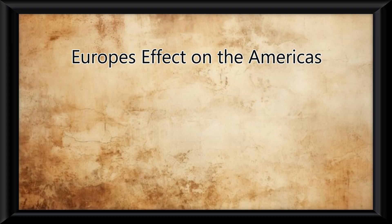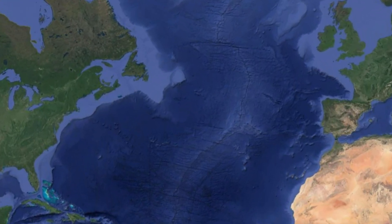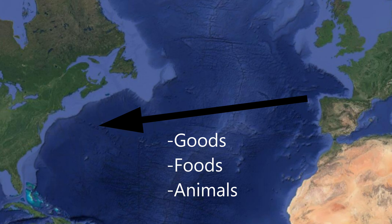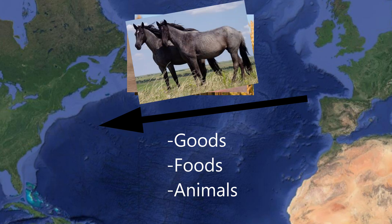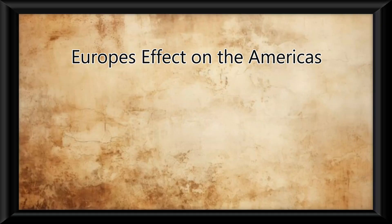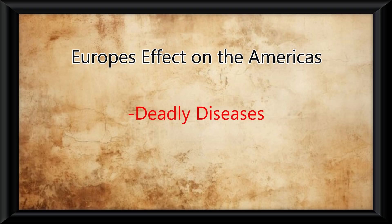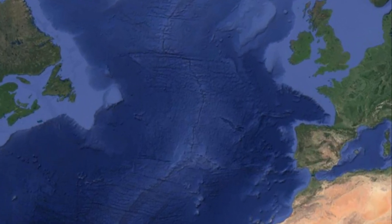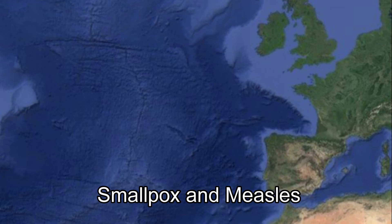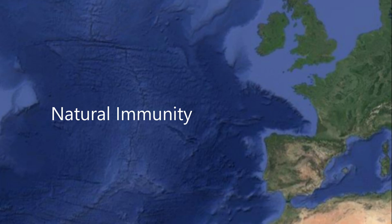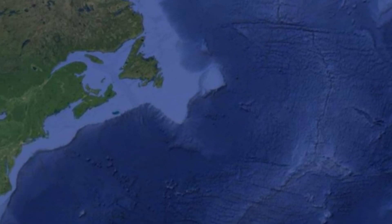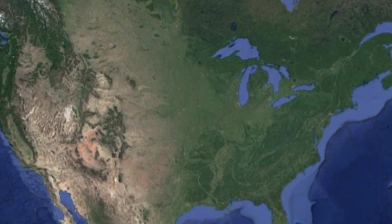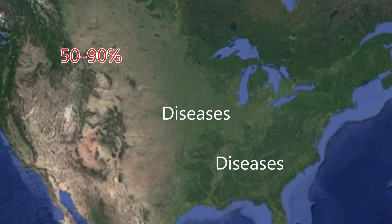As for Europe's effect on the Americas, yes, there was goods, foods, and animals brought to the Americas like wheat, rice, horses, and pigs. But the biggest thing that came from Europe to the Americas was deadly diseases. Europeans had been living with diseases like smallpox and measles for many centuries, and had gained a sort of natural immunity to them. The natives, however, did not have the same immunity, and therefore when these diseases got introduced, it's said that 50-90% of the native population died because of them.